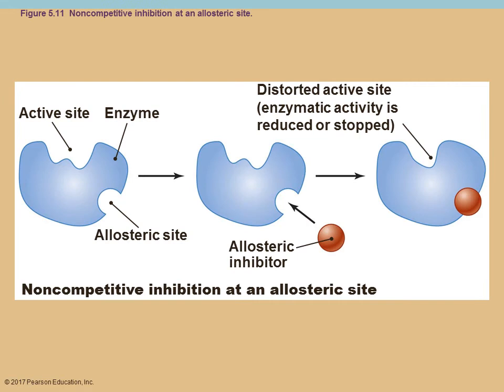A non-competitive inhibitor competes with the substrate indirectly. It binds at some other site on the enzyme — not the active site — called an allosteric site. When it binds, that causes a shape change that alters the shape of the active site, making it impossible for the substrate to bind. It's like when a lock changes its shape — the key no longer fits.